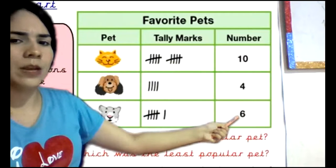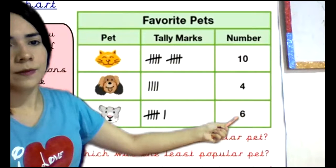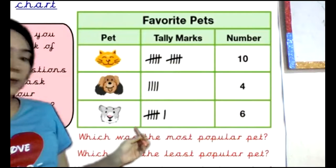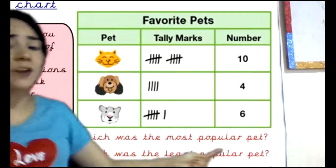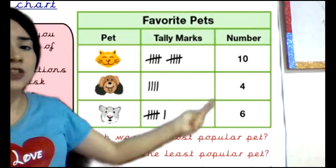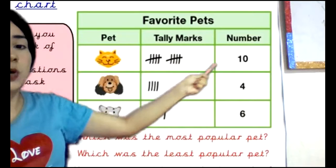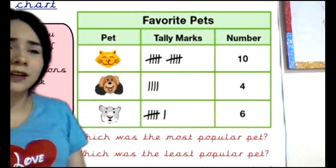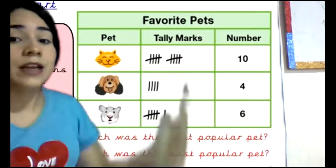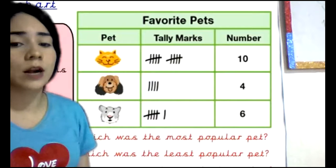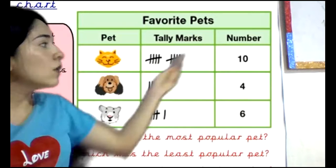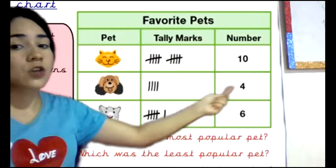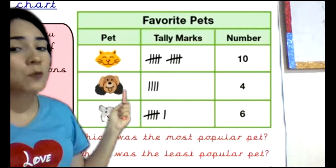Which was the most popular pet according to the numbers? What is the largest number? Ten. So the favorite pet that people preferred is the cat. Now, which was the least popular? Look at the numbers — the smallest number is four. So the dog was the least popular pet in this example.